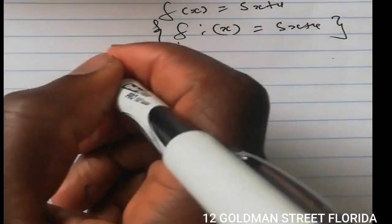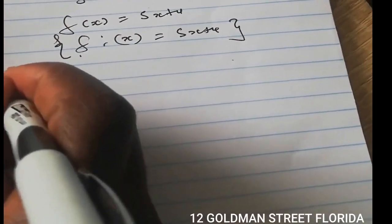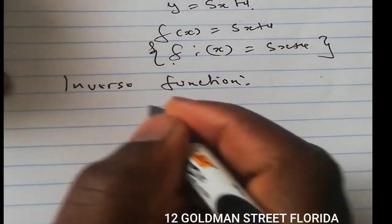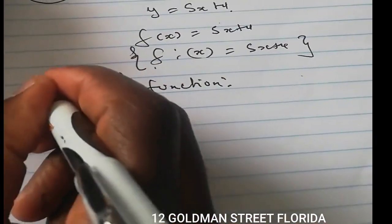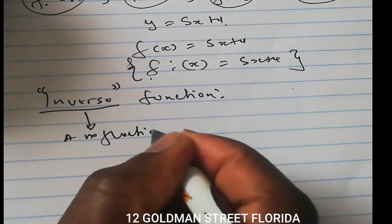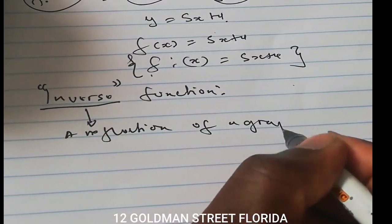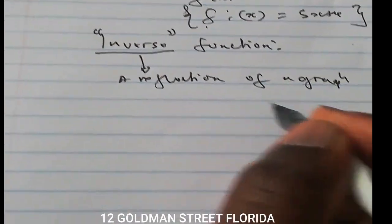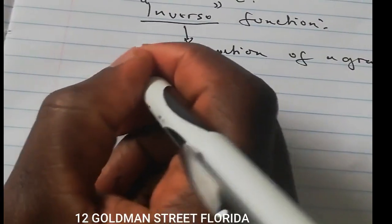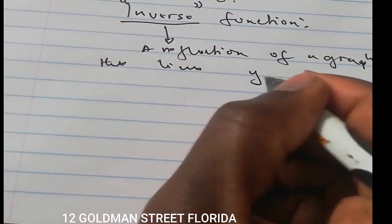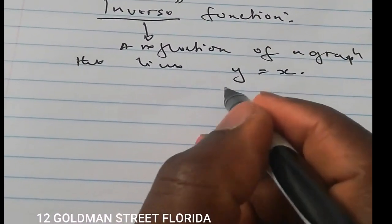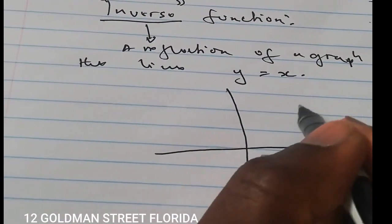Now there is what we call the inverse function. An inverse is a reflection of a graph. Our graph is a relationship, and our inverse is a reflection of that graph in the line y = x. Remember, the line y = x is the line that divides the Cartesian plane into two.